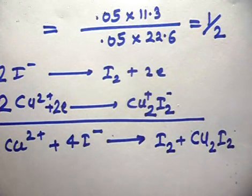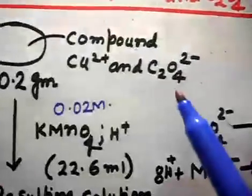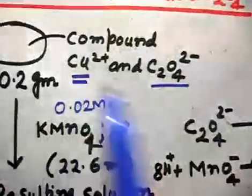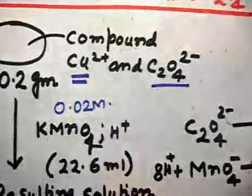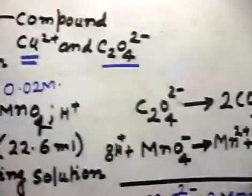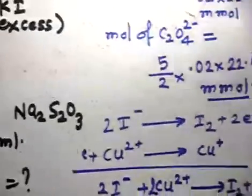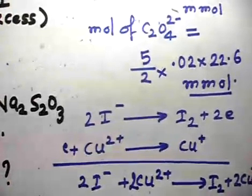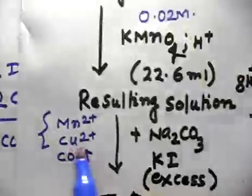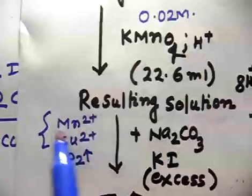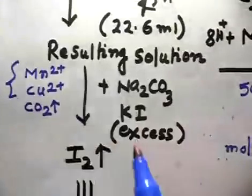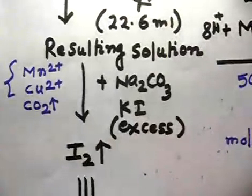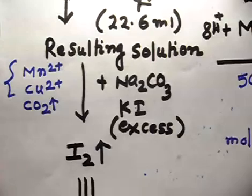This is quite a good problem. The key point is that in the first step only C₂O₄²⁻ gets oxidized, and in the second step only Cu²⁺ gets reduced to Cu⁺ form, because C₂O₄²⁻ has already been oxidized and CO₂ gas has been liberated. We will learn all these concepts slowly through practice and discuss the next problem.